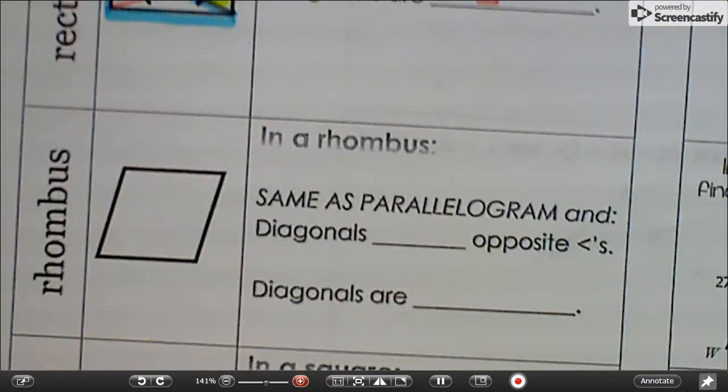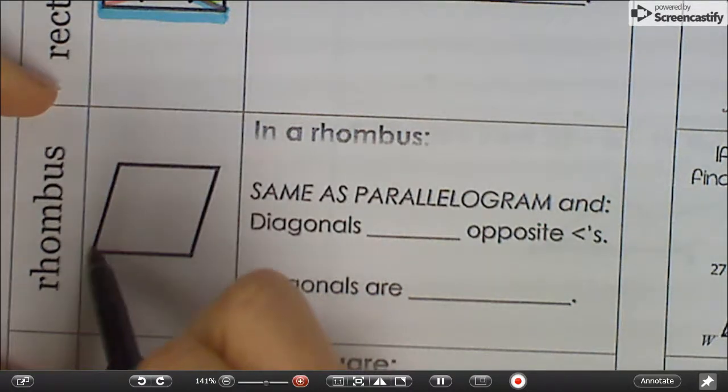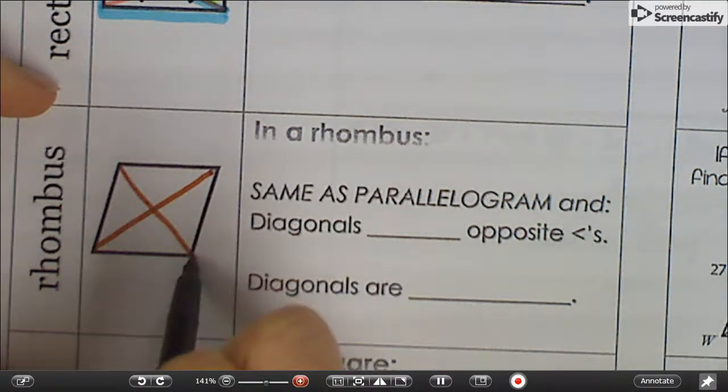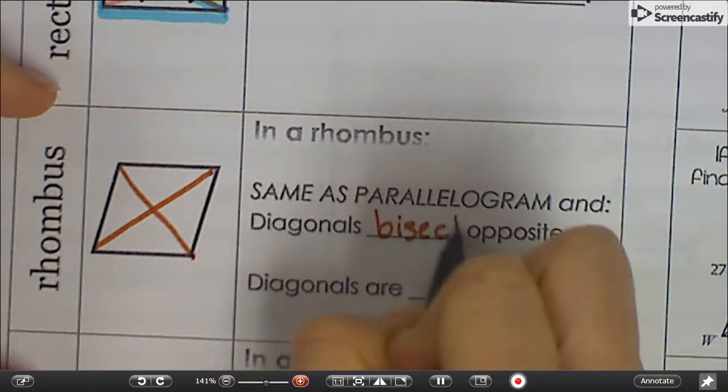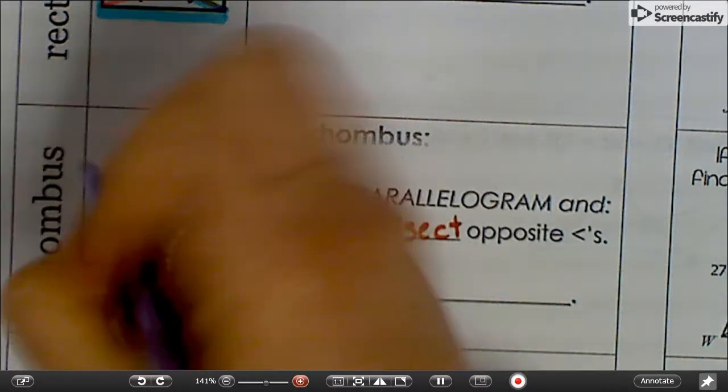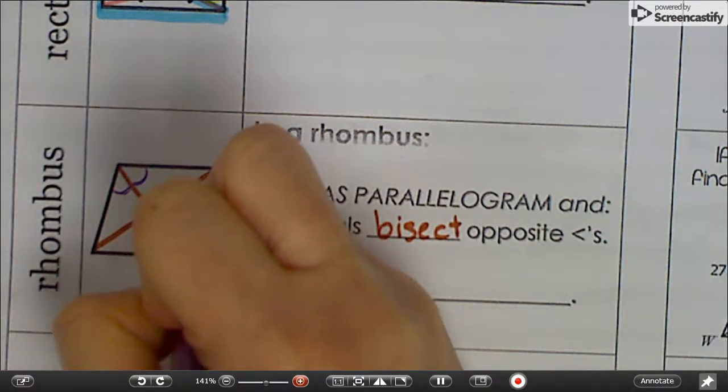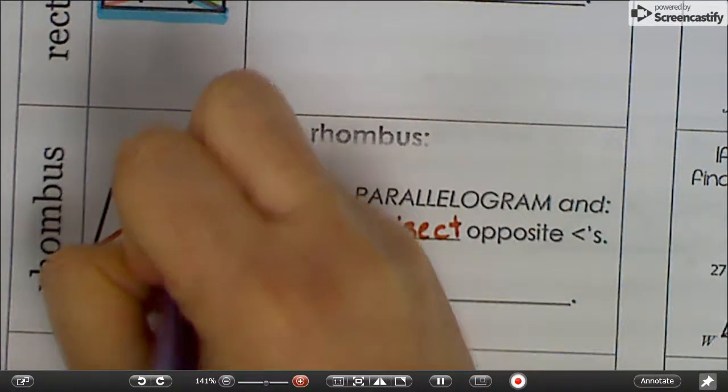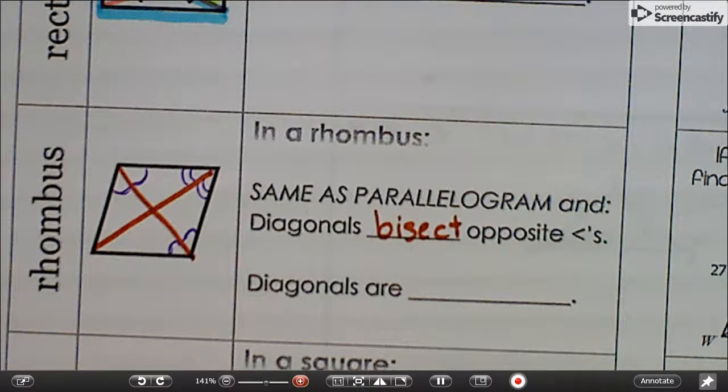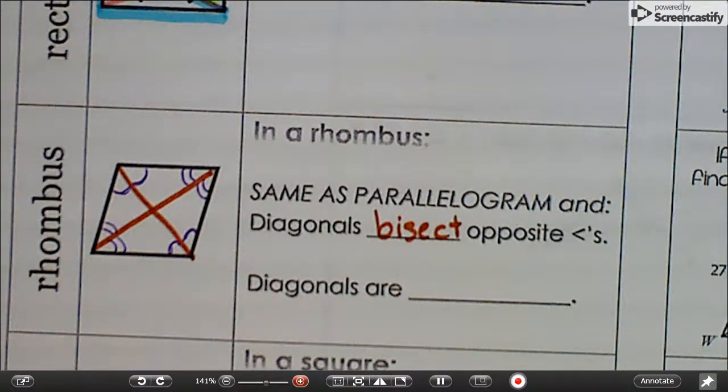All right, a rhombus. Again, a rhombus is always a parallelogram. So it has the same properties as a parallelogram and a couple other things. So what that means is that this angle is congruent to that angle, which means that these have to be congruent to those also. And that angle is congruent to that angle. And that way as well. All right. They bisect the opposite angles.